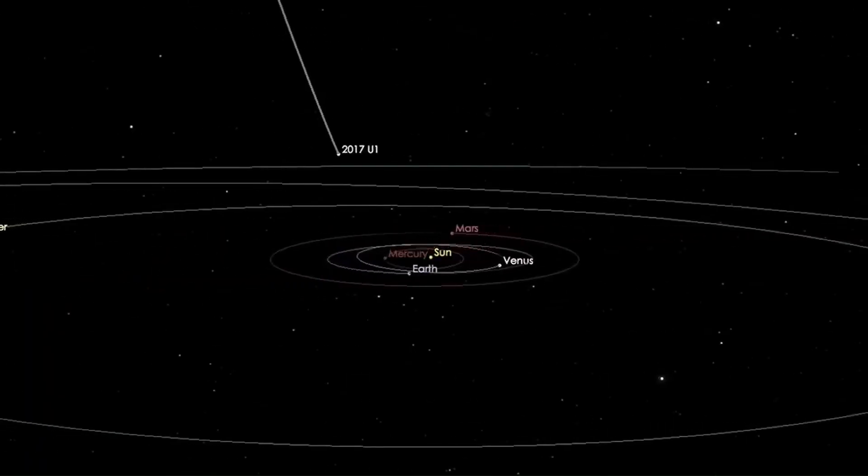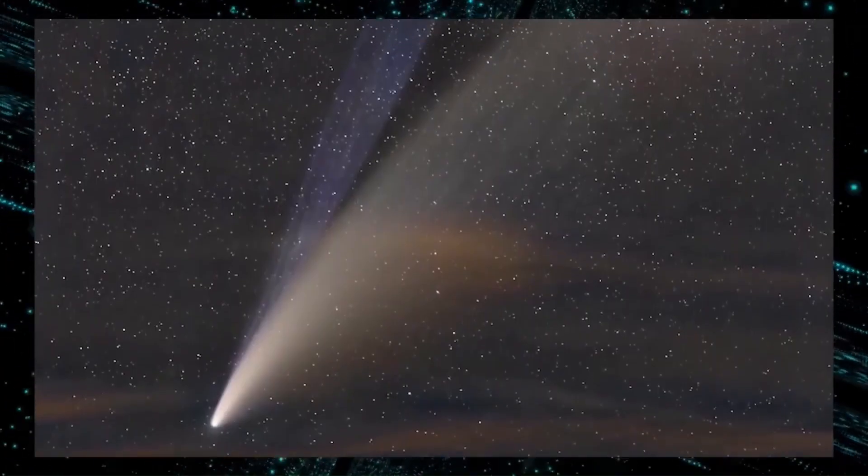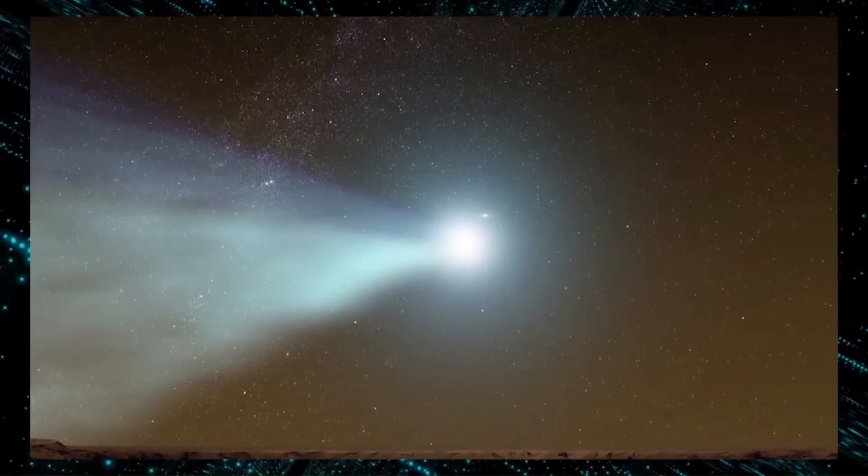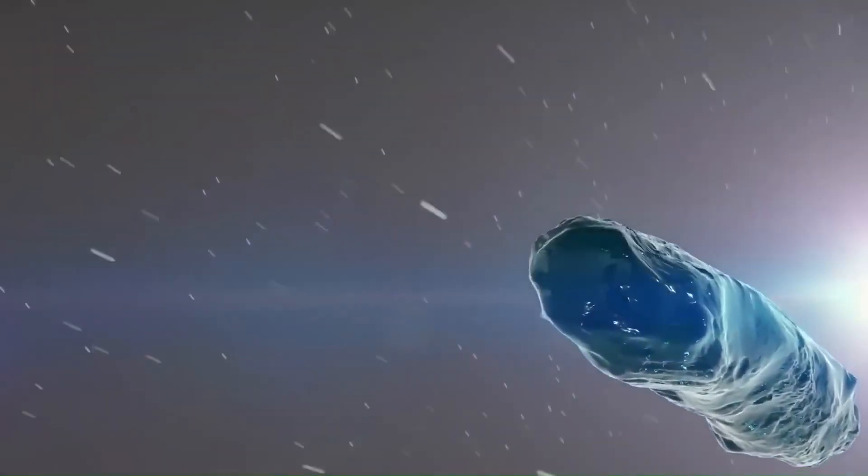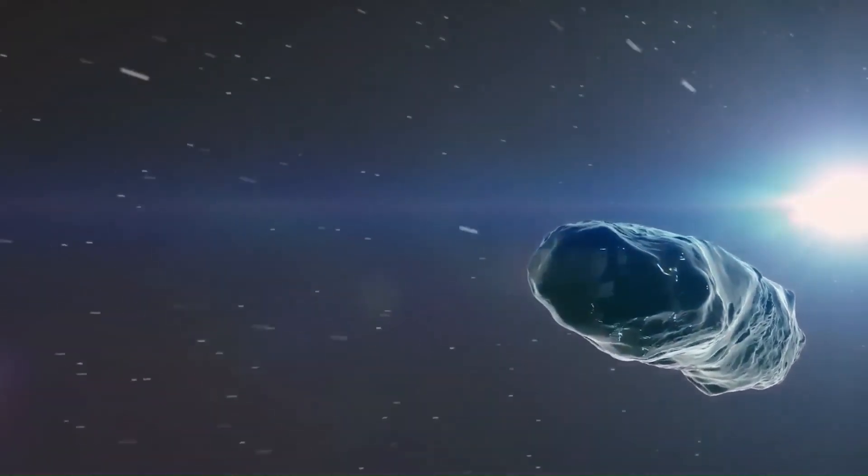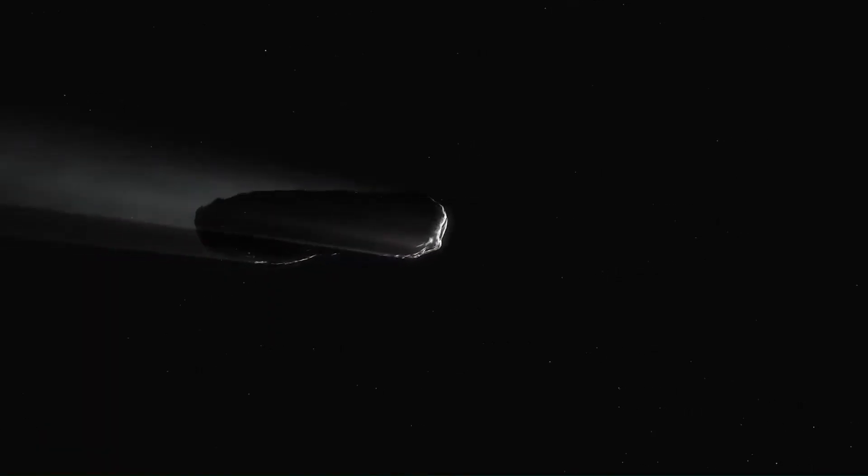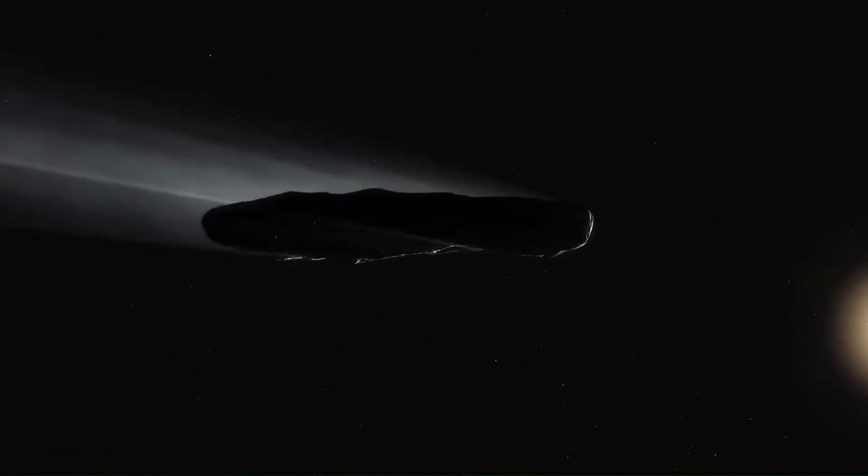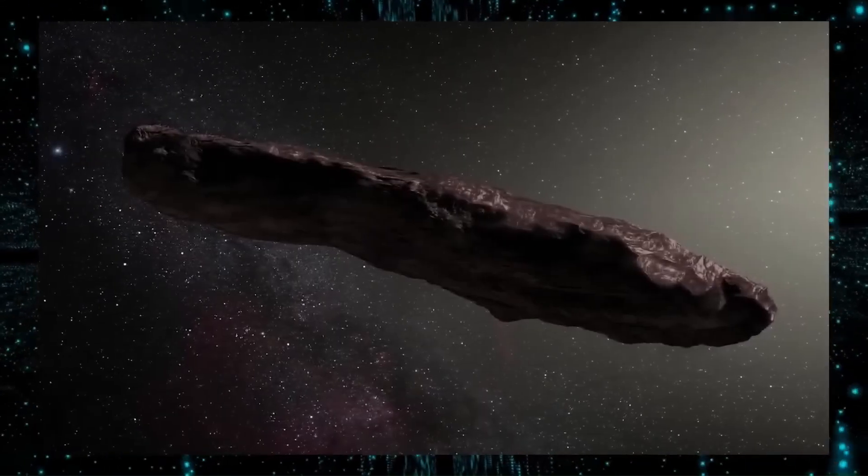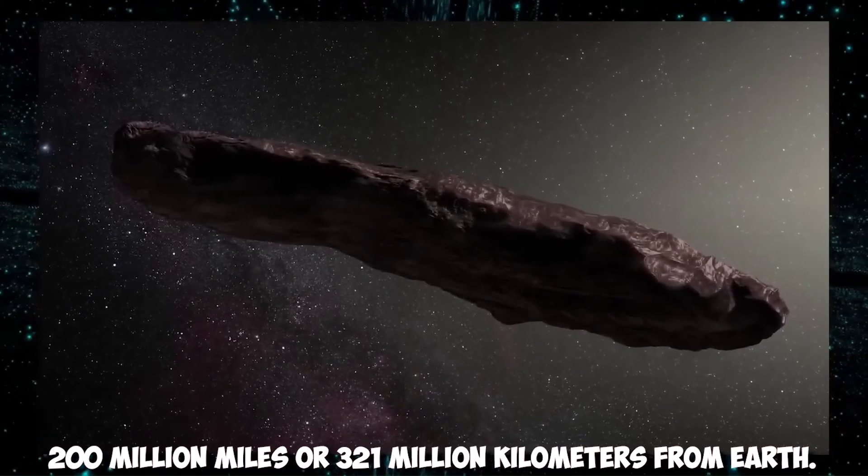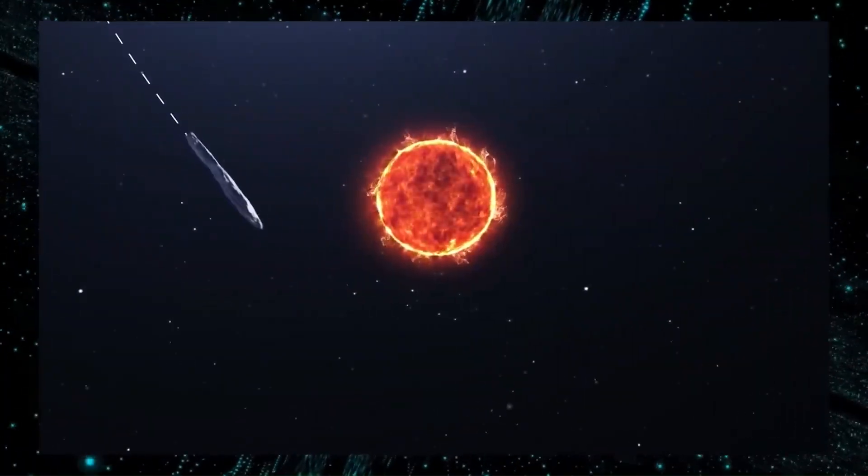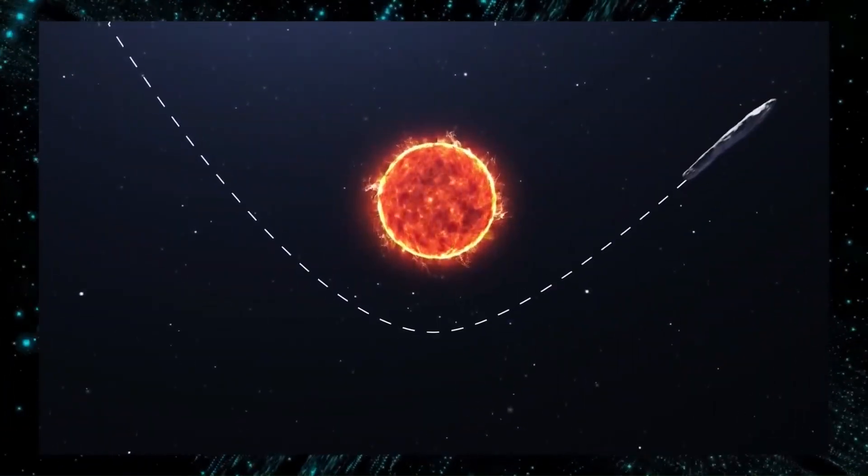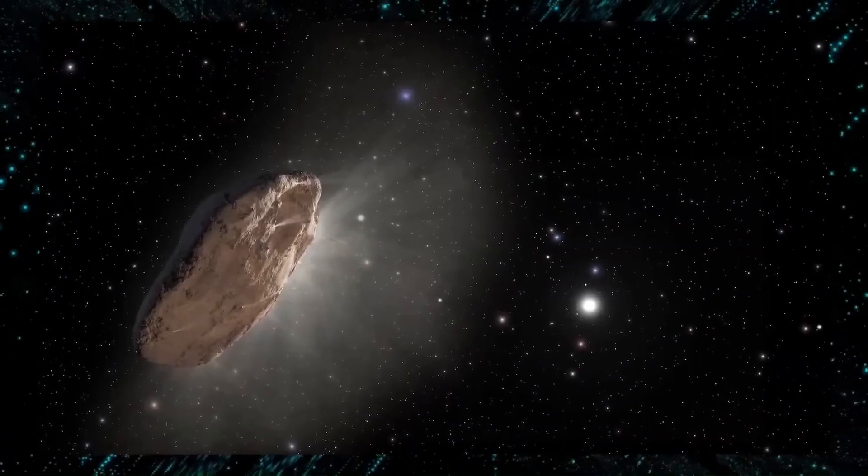Avi Loeb has high hopes the telescope will be able to detect the next interstellar object as it approaches our solar system, which would allow us to have sufficient time to launch a spacecraft to capture it and have a better look. He uses the OSIRIS-REx mission as an example, which was launched in September 2016 and has already reached the asteroid Bennu, which is located more than 200 million miles or 321 million kilometers from Earth. It is now returning and is scheduled to do so this year with pictures and samples.